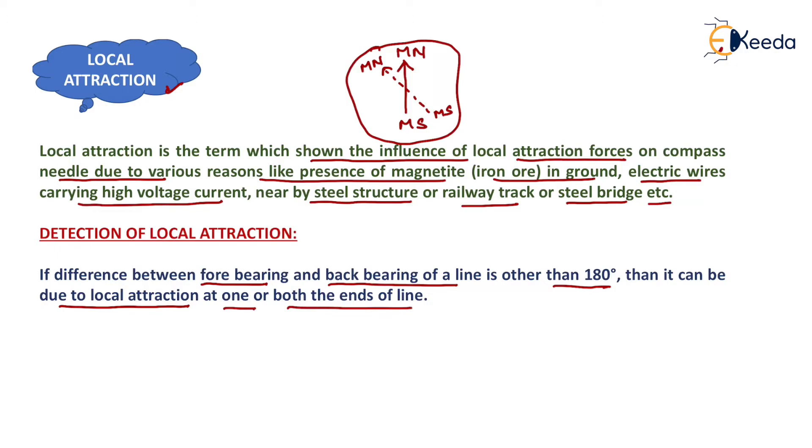Suppose that if a line is shown here like this and if we will measure here, that is the fore bearing, and that will be the back bearing of this line. If the difference between the back bearing and fore bearing is other than 180 degrees, then it will be due to local attraction at one station or one end of the line or at both ends of the line.